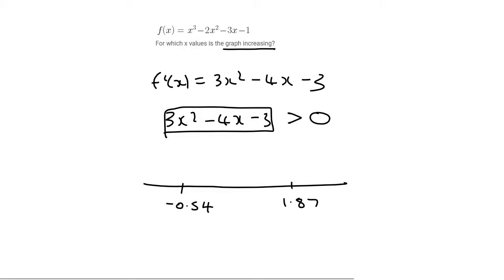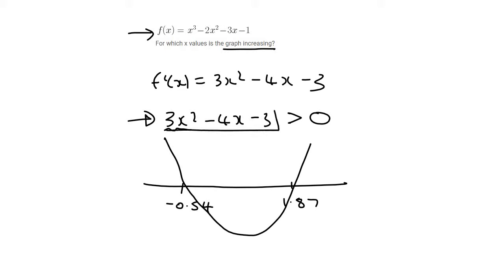Now what you do is you forget about the original graph. You just look at this graph. What type of graph is that? That's a parabola, and the number in front of x squared is positive. So it's a smiling face parabola. And this inequality says, where is this parabola positive?